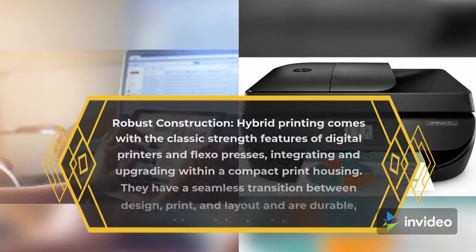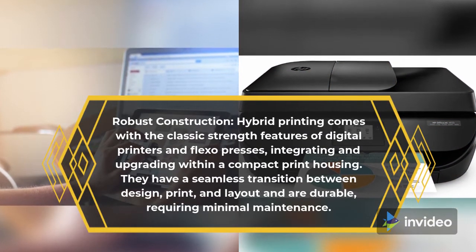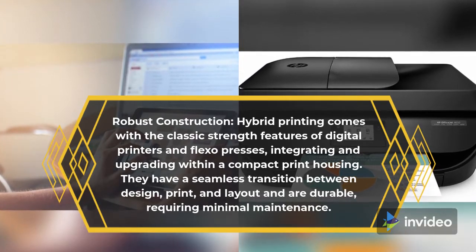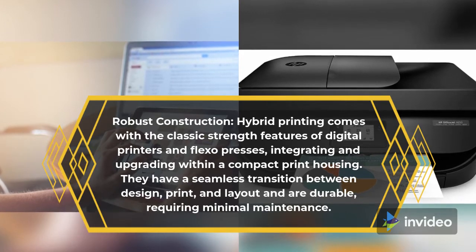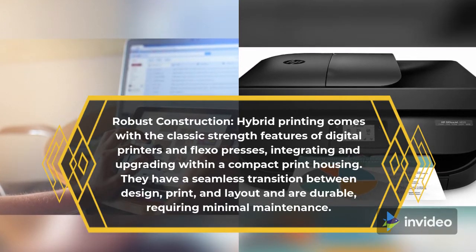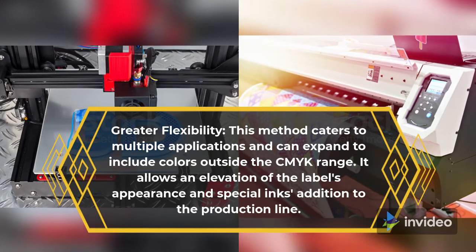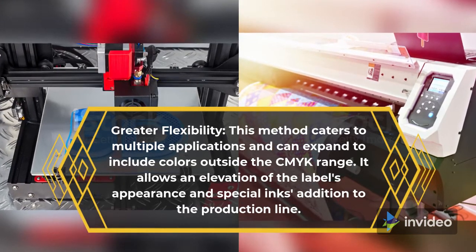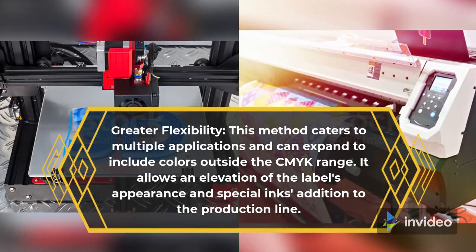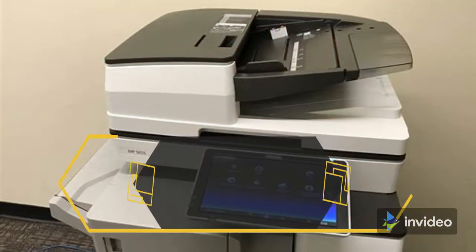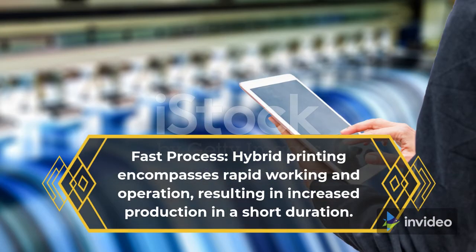Robust construction: hybrid printing comes with the classic strength features of digital printers and flexo presses, integrating and upgrading within a compact print housing. They have a seamless transition between design, print, and layout and are durable, requiring minimal maintenance. Greater flexibility: this method caters to multiple applications and can expand to include colors outside the CMYK range, allowing an elevation of the label's appearance and special inks addition to the production line. Fast process: hybrid printing encompasses rapid working and operation, resulting in increased production in a short duration.